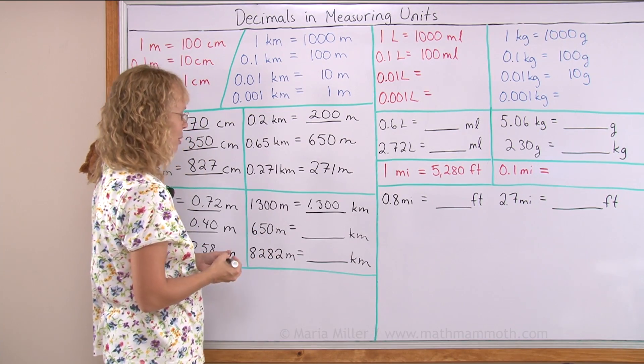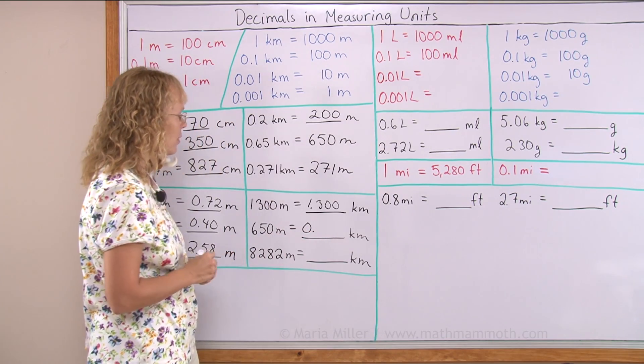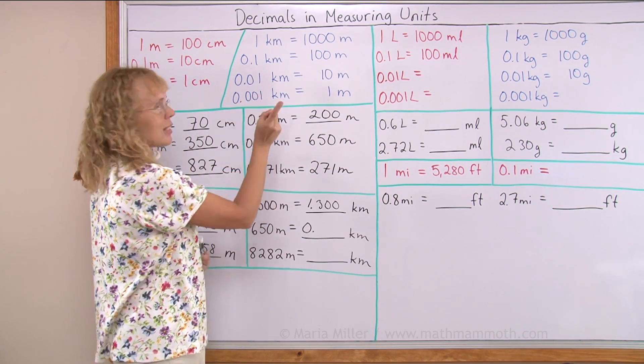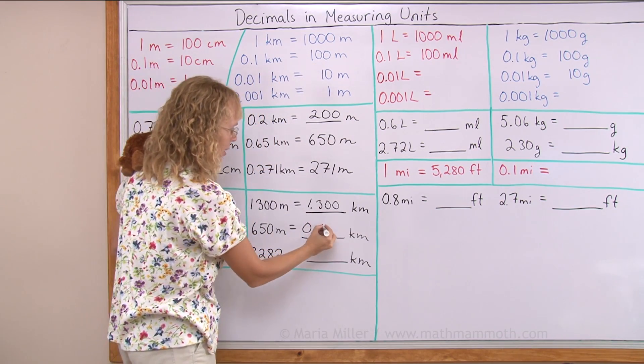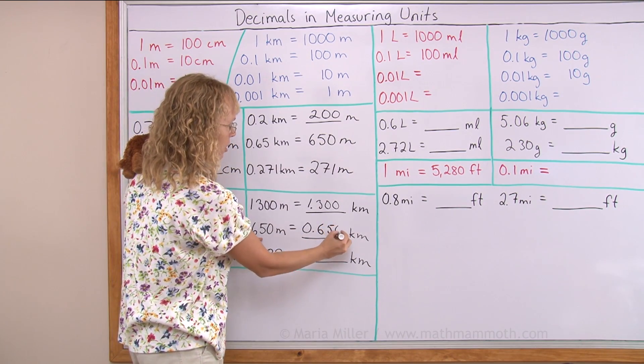650 meters will be less than a kilometer. Zero point something, right? Now 600 meters would be exactly six tenths of a kilometer. So this six must go to the tenths place. And then the rest of it follows.